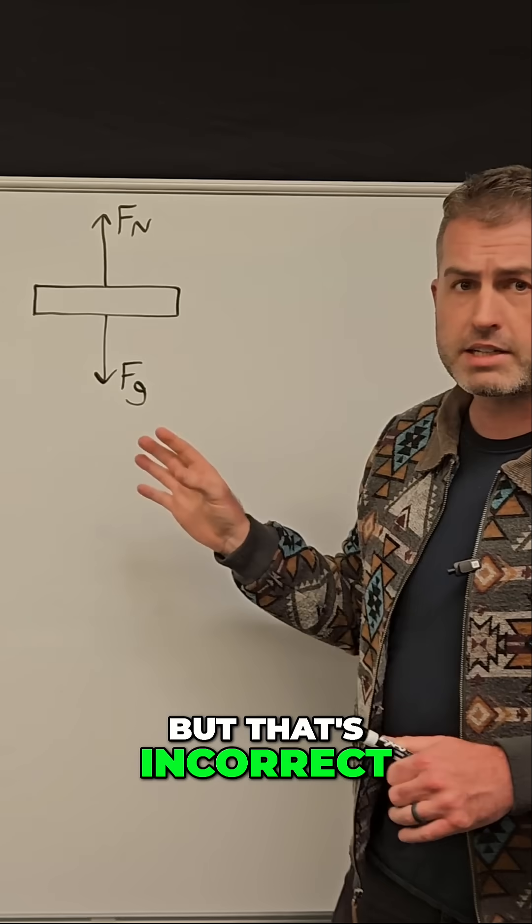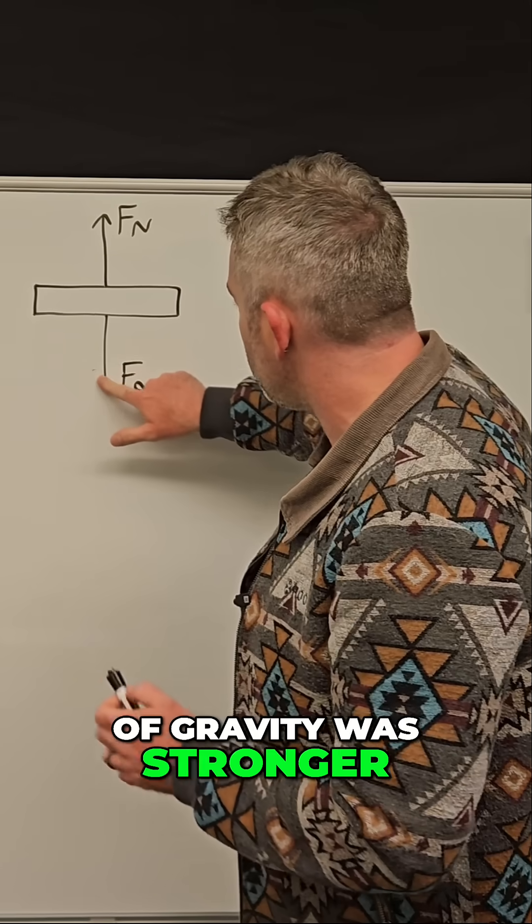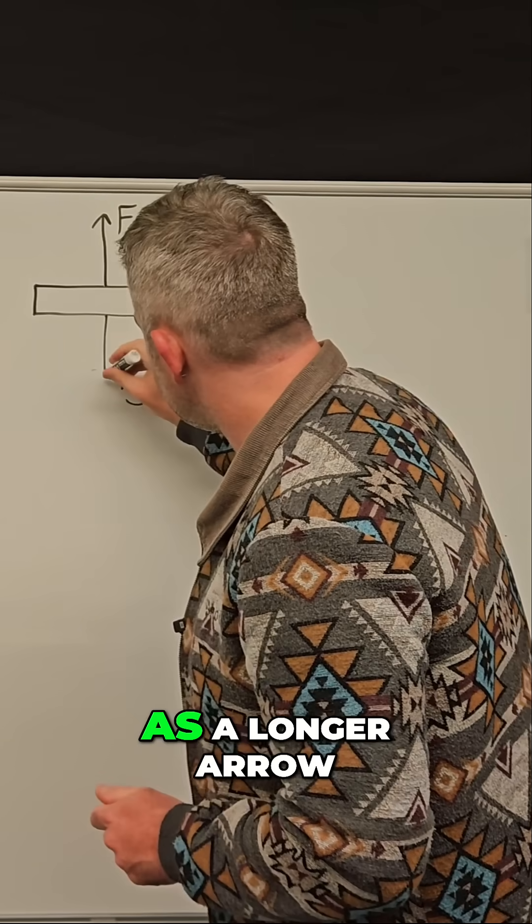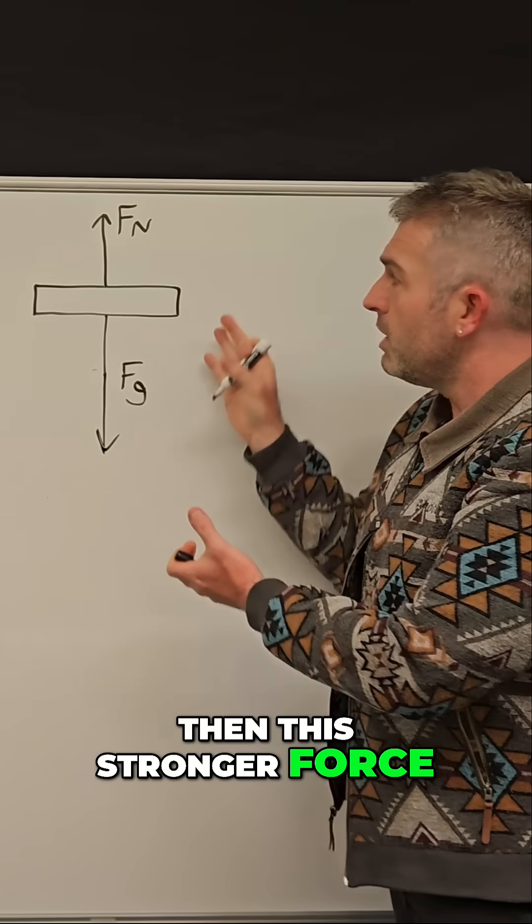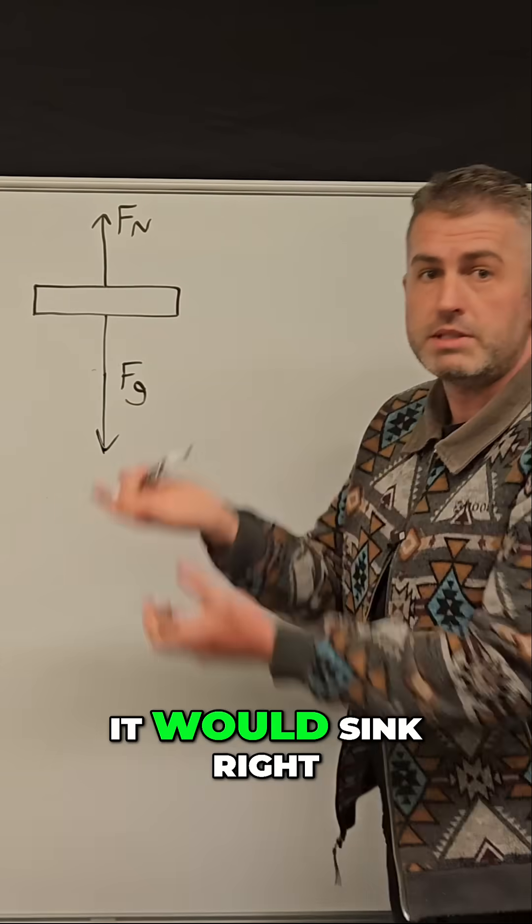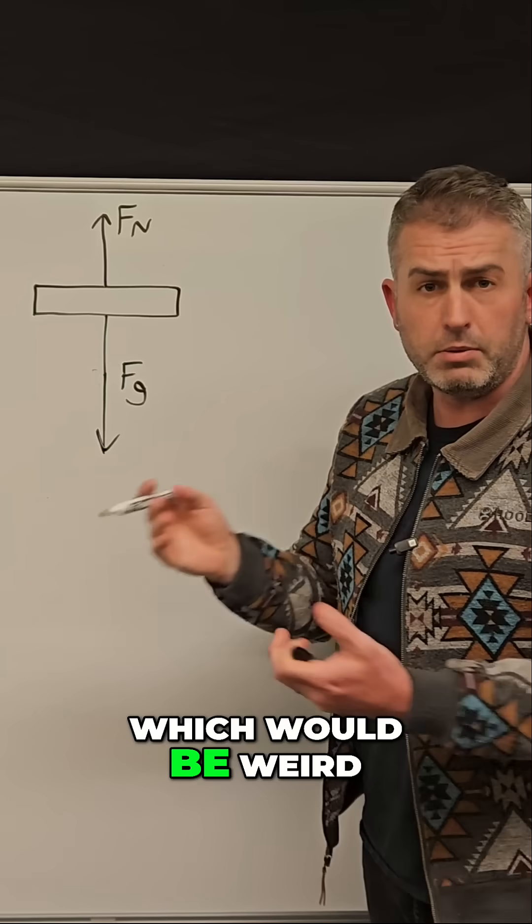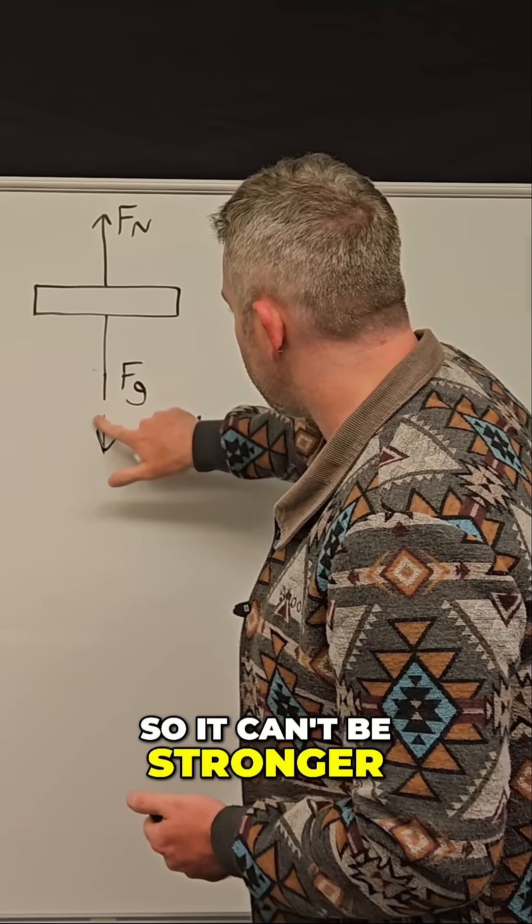But that's incorrect because if this force of gravity was stronger, if I drew it as a longer arrow, then this stronger force would cause this thing to fall. It would sink right through my hand, which would be weird. So it can't be stronger.